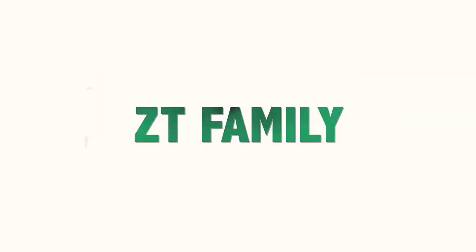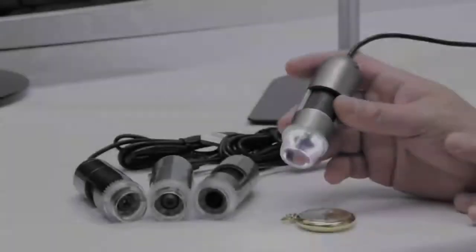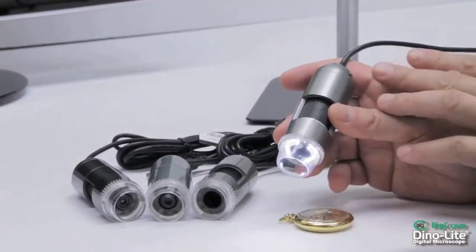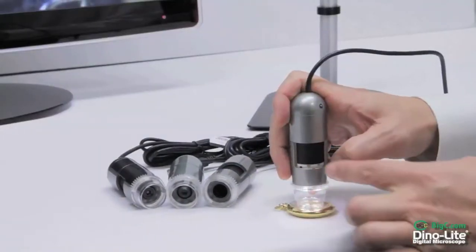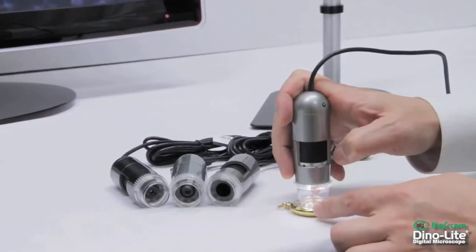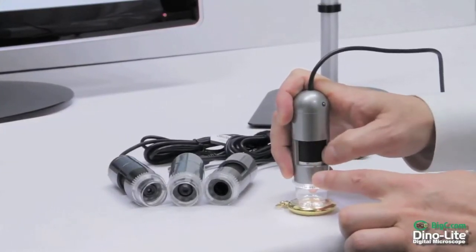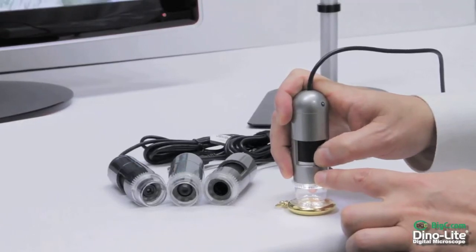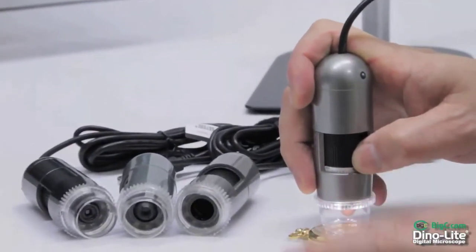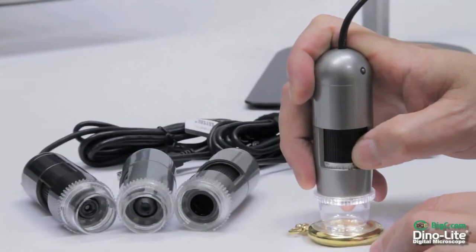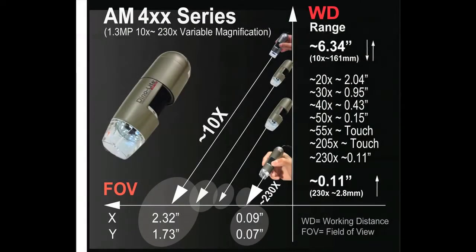Introducing our ZT family. First we'll start with the AM413ZT. This model is a standard working distance model with magnification capabilities of 10 to 220 times, achievable by rotating the side knob. When directly upon the subject as seen here, one can achieve 50 to 200 times the magnification by simply focusing the dial.